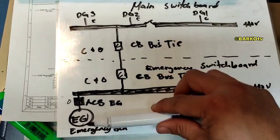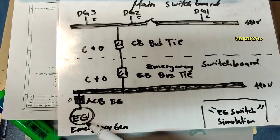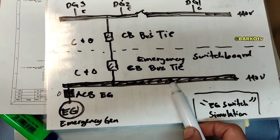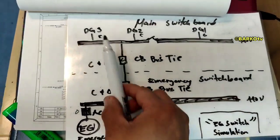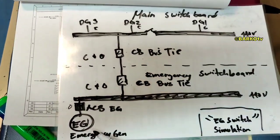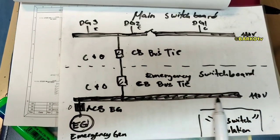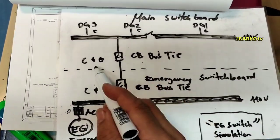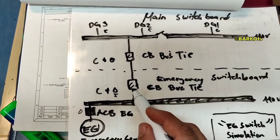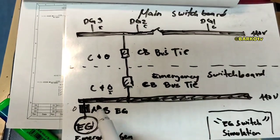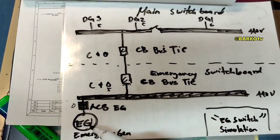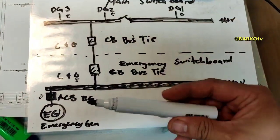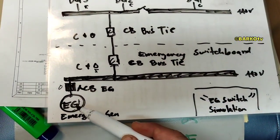The emergency generator supplies the emergency switchboard in isolated mode. In normal operation, the main switchboard supplies the emergency switchboard because the emergency generator is turned off. In the next scenario, if you open the bus tie on the other side, the same sequence occurs — you have isolated the main switchboard from the emergency switchboard.